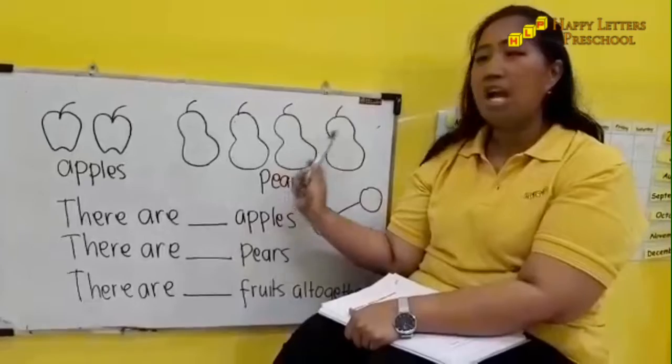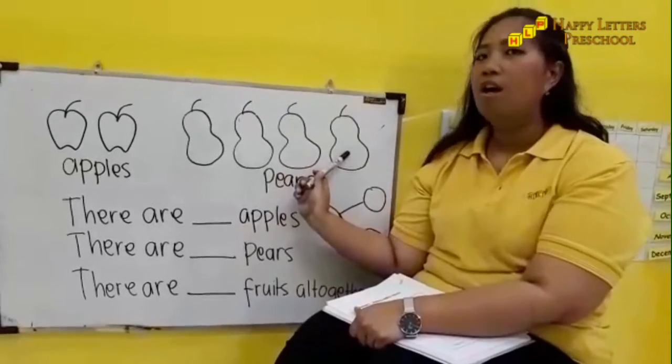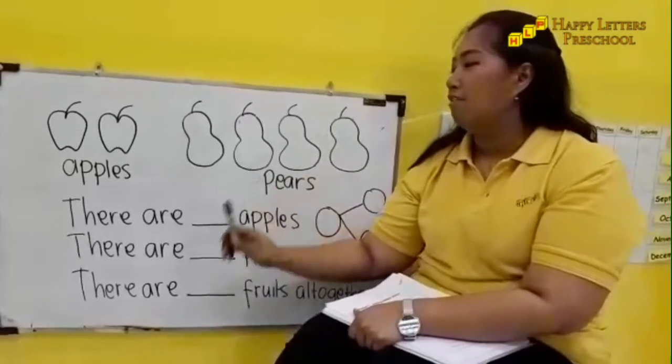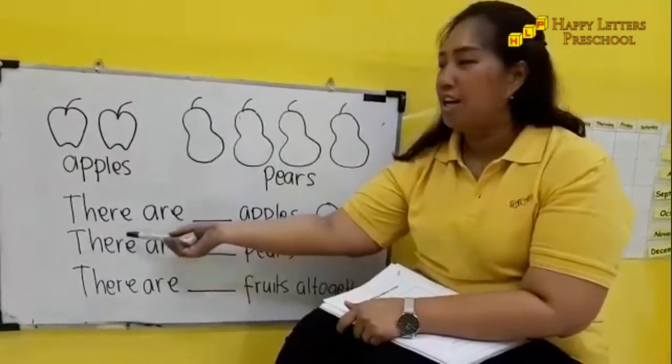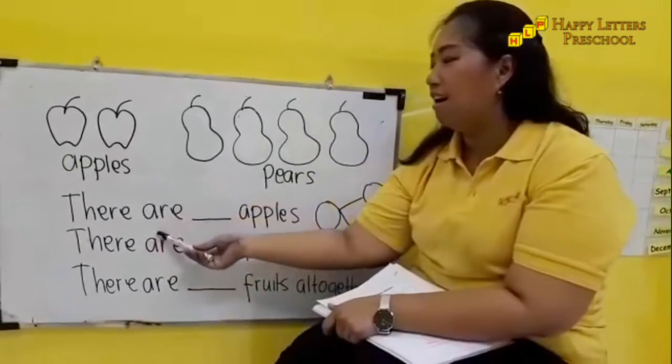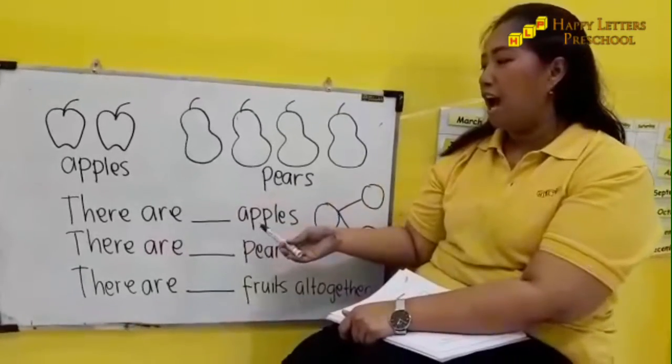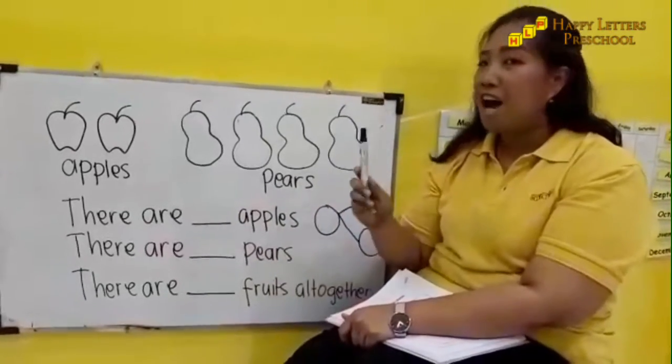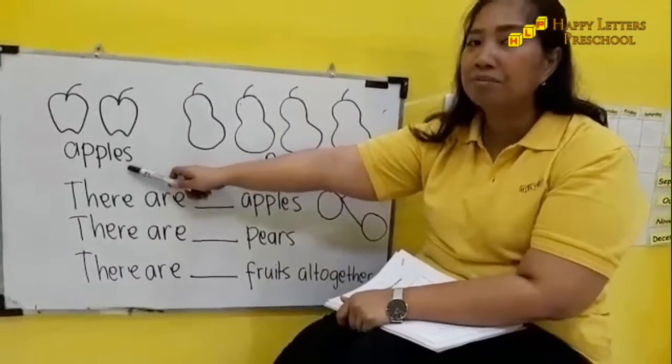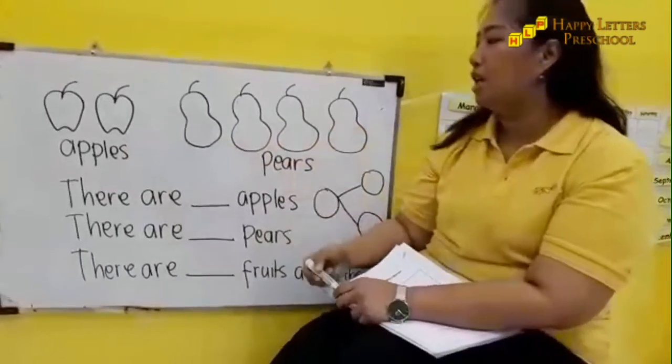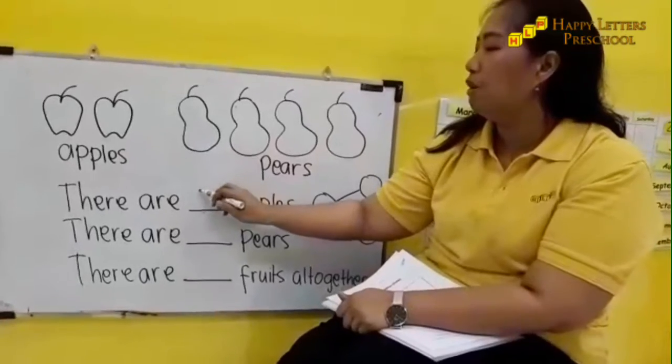Now let's read the words here. There are blank, blank, blank apples. We counted the apples before. How many apples do we have? One, two. Good! Let's write down number two over here.